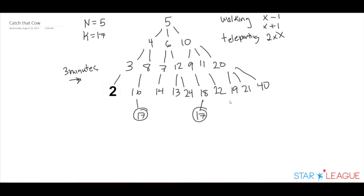Note that we could have used depth-first search for this, but it can potentially get lost, as searching down one possible path can lead us very far when the solution can be found much sooner. So now that we know visually how to do this, how do we code this?